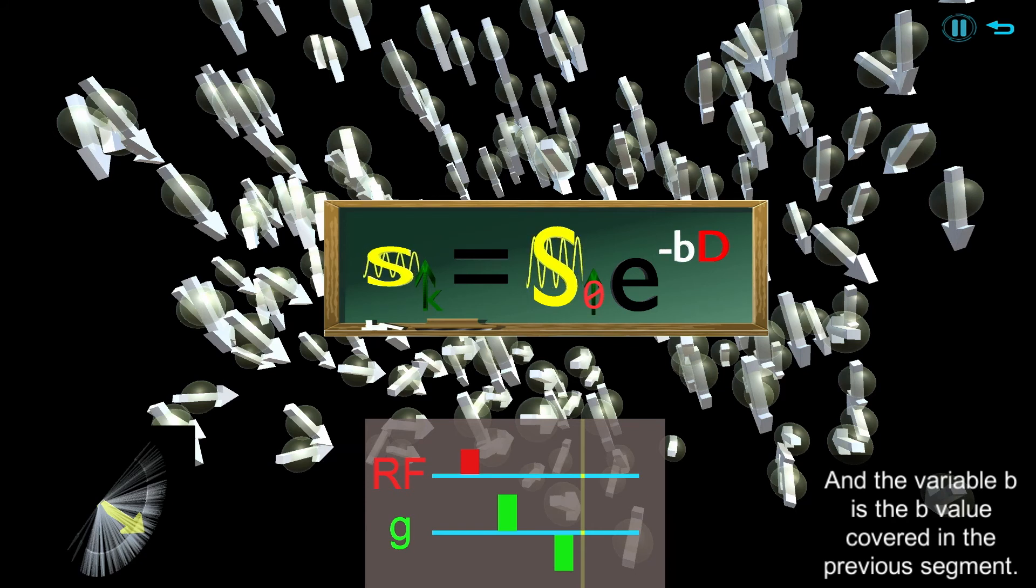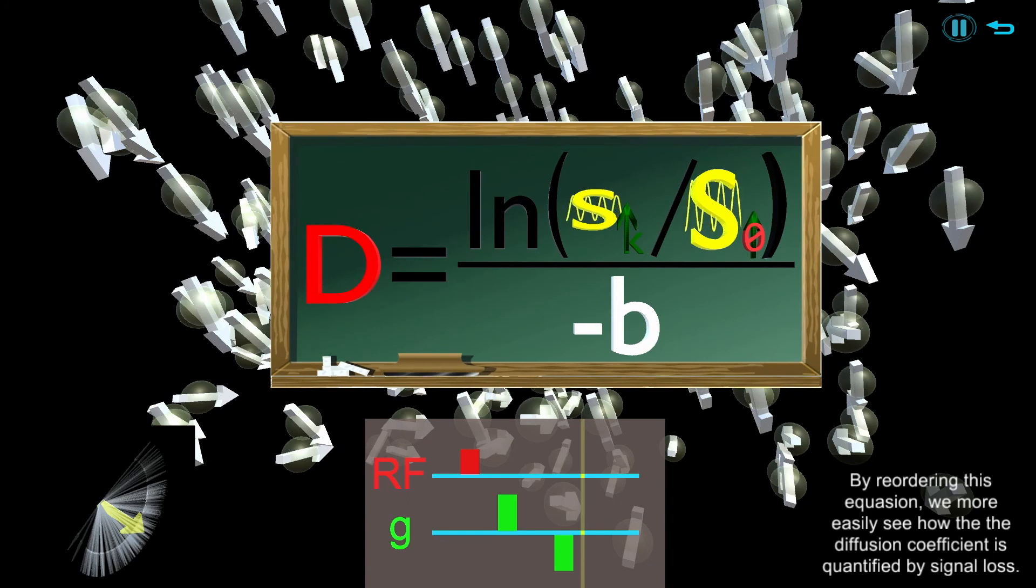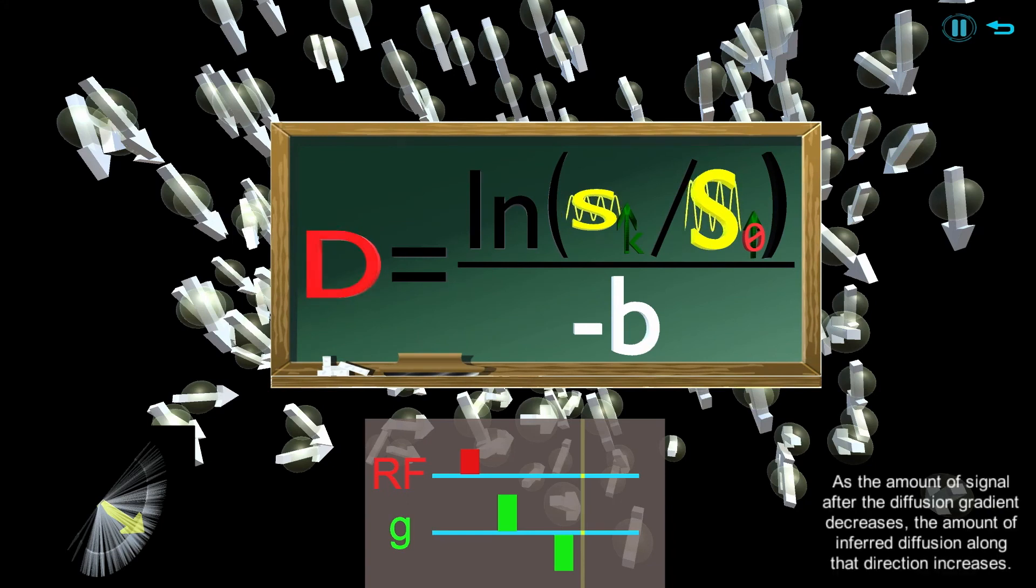By reordering this equation, we more easily see how the diffusion coefficient is quantified by signal loss. As the amount of signal after the diffusion gradient decreases, the amount of inferred diffusion along that direction increases.